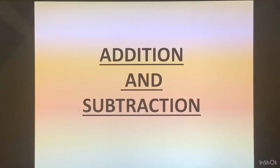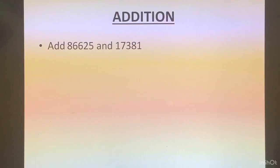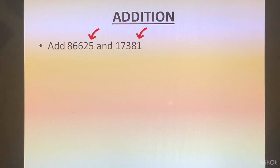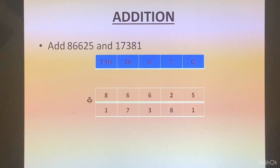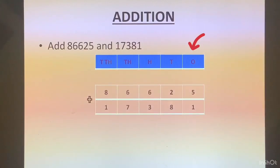The third chapter is addition and subtraction — that is the name of the chapter. In this particular video, I will cover addition. In the example, we have to add 86625 and 17381. Both are 5-digit numbers. First, we will write the place values and underneath write the numbers. We will start adding from the ones place, that is the extreme right.